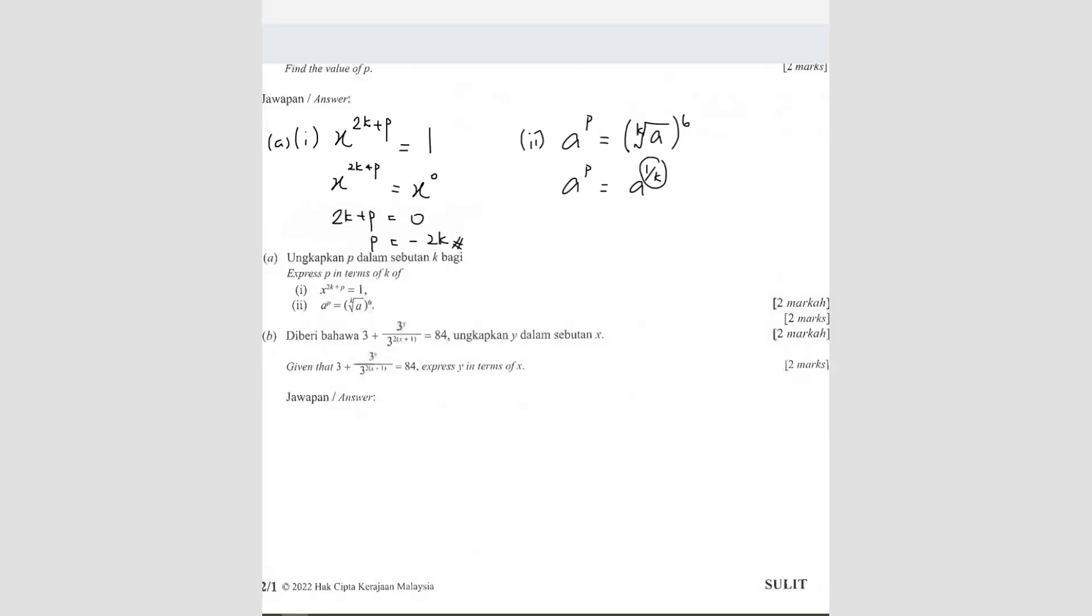When the index here is fraction, it becomes root. Okay, so for example, if I write like this, 1 over 2, right? 2 down there becomes square root. If I write A 1 over 3, it becomes cube root. Okay, so now it's root K, right? So it's 1 over K.